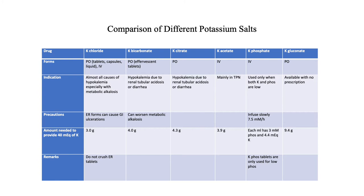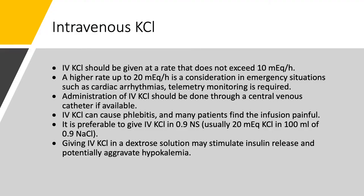Potassium gluconate is available over the counter, but it's not recommended. I don't like the idea of patients managing their own potassium with over-the-counter medications. For intravenous potassium chloride, the rate should not exceed 10 milliequivalents per hour. Twenty milliequivalents per hour is possible in a true emergency — if you have arrhythmias, you can give 20 mEq/hr for the first hour and then drop to 10 mEq/hr — but it's rarely needed. The patient must be on telemetry. It's preferable to give it through a central catheter because it burns and can cause phlebitis. We like to give it in normal saline and not with dextrose, because dextrose will stimulate insulin release, and insulin drives potassium intracellularly, which aggravates the hypokalemia. Usually we give K-riders: 20 milliequivalents of KCl in 100 mL of 0.9% sodium chloride, given over two hours.